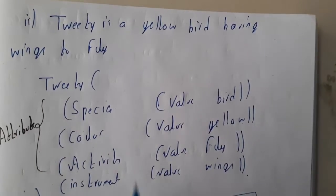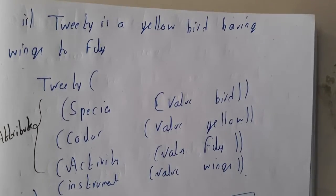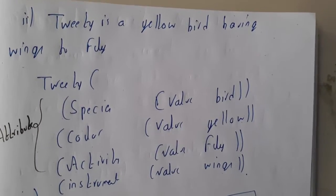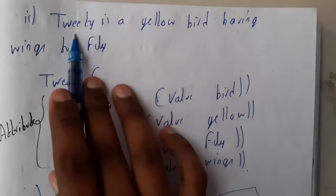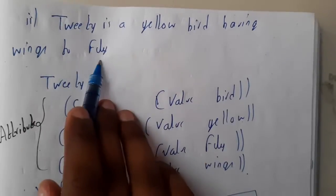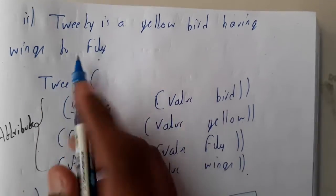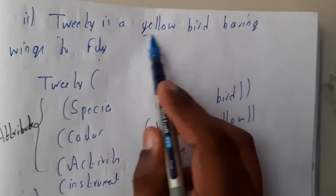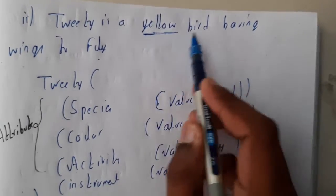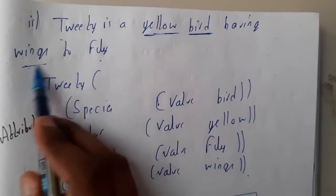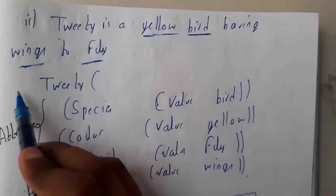Similarly, if they gave a statement and they asked you to write it in terms of frames, you can write it in this way. Tweety is a yellow bird having the wings to fly. What are the different things? Tweety is the bird name, that's fine. Its color is given, its species is given, it says that it is having wings and it says that it can fly.